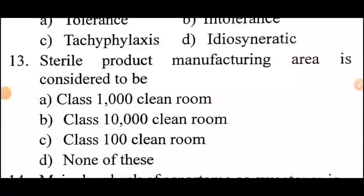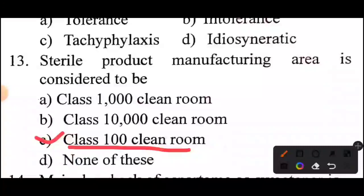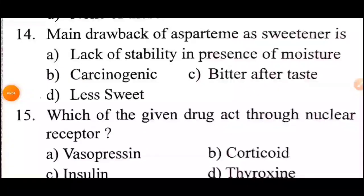Question 13: a sterile product manufacturing area is considered to be? Answer: option C, Class 100 Clean Room.